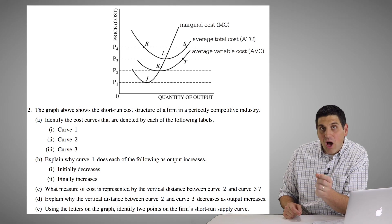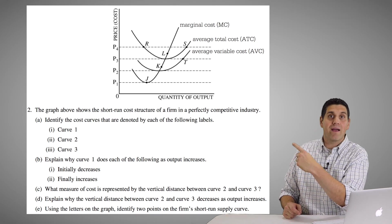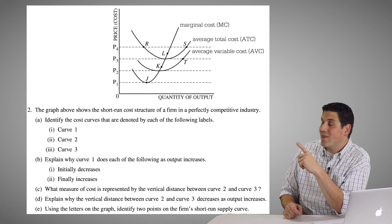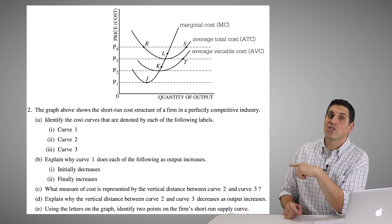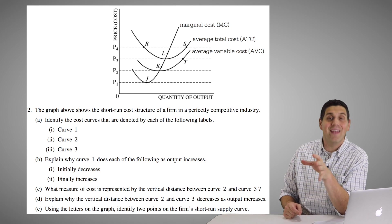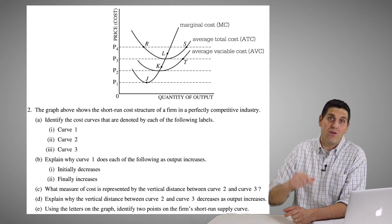The average variable cost goes down, hits a minimum, goes back up. But they're not parallel. Remember, the distance between the average variable and the average total gets smaller and smaller. Again, you're asked questions about this later in the free response.